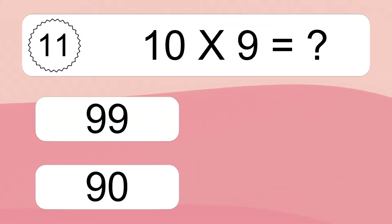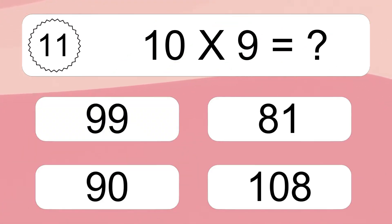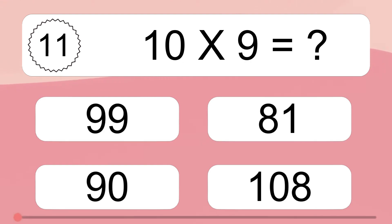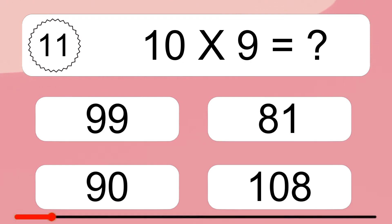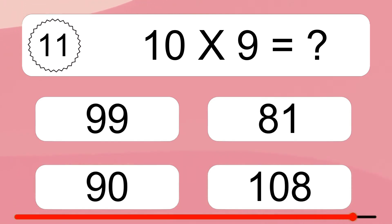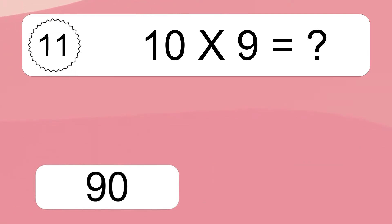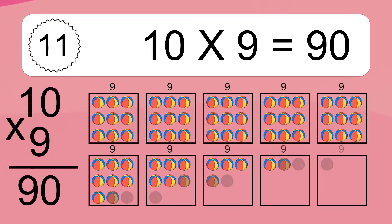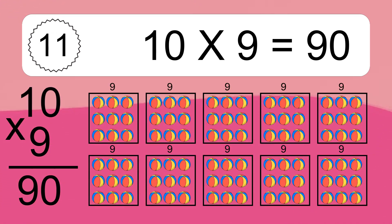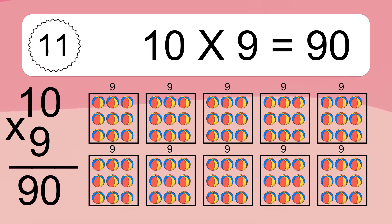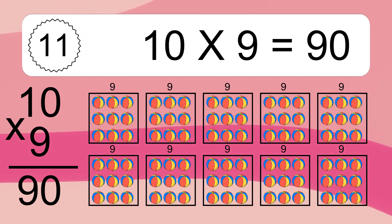10 times 9 equals what? 10 times 9 equals 90. We have 10 boxes and each box has 9 colorful balls inside. If you count all the balls in all the boxes together, you will have 10 times 9 balls. This equals 90 balls.